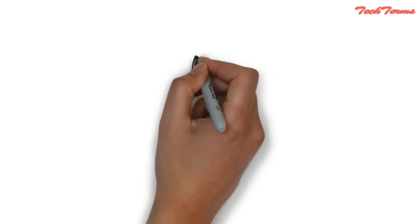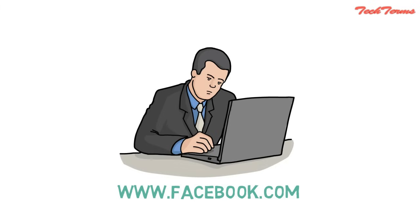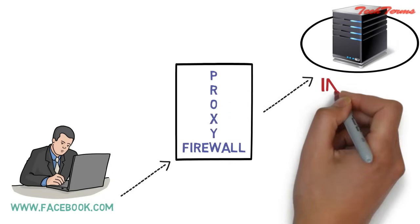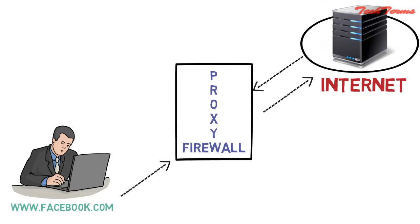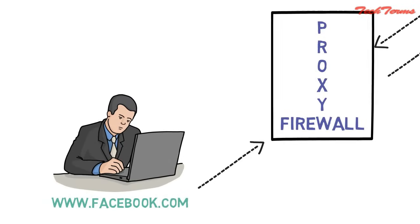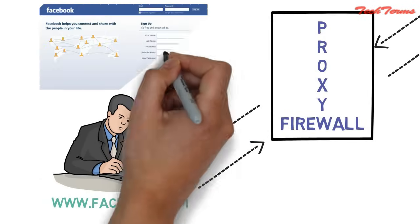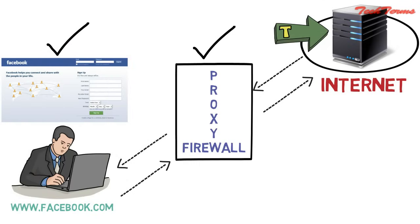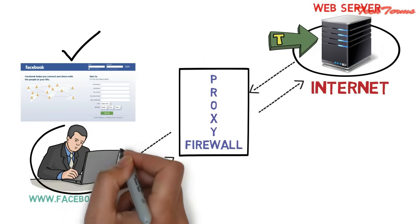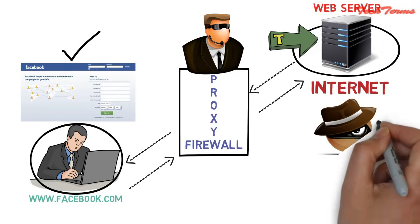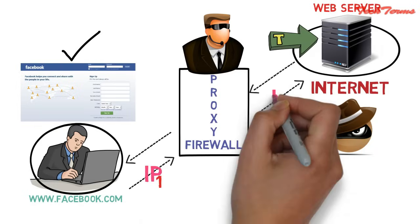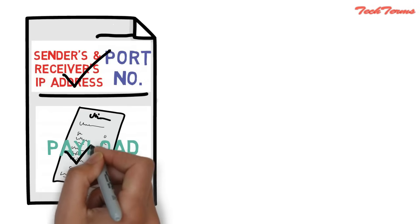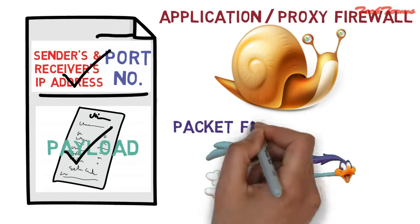Let us understand this whole process. The user enters the website www.facebook.com in the web browser. The proxy firewall receives the request and forwards it to the internet. The web server receives the request and responds back to the proxy firewall with the requested information. The proxy firewall then forwards it to the original client. In this whole process, the web server thinks that the proxy firewall is the one who wants to visit www.facebook.com — that is, proxy firewalls do not disclose the origin of the request or our computer's IP address. Since application firewalls also check the payload of the received data packet, they are generally much slower than packet filtering firewalls.